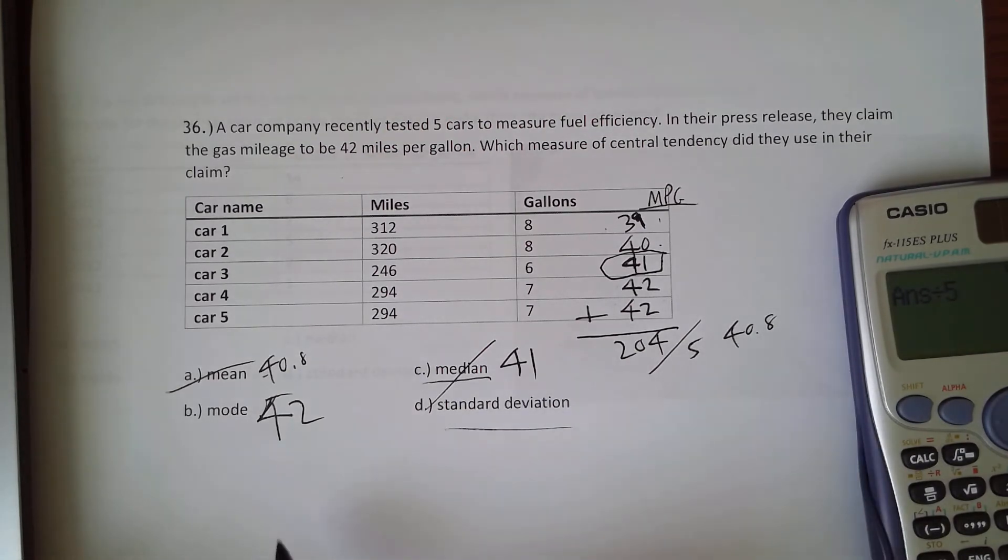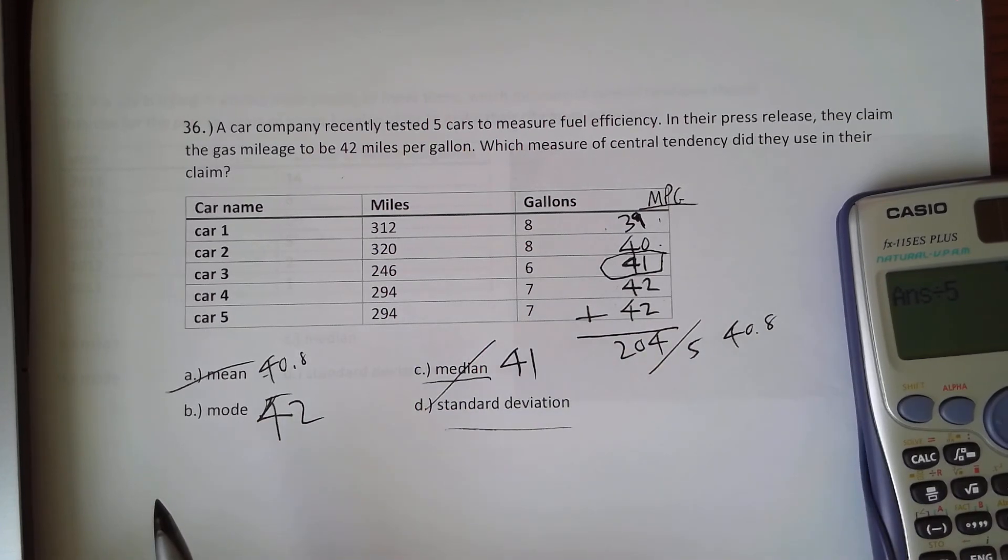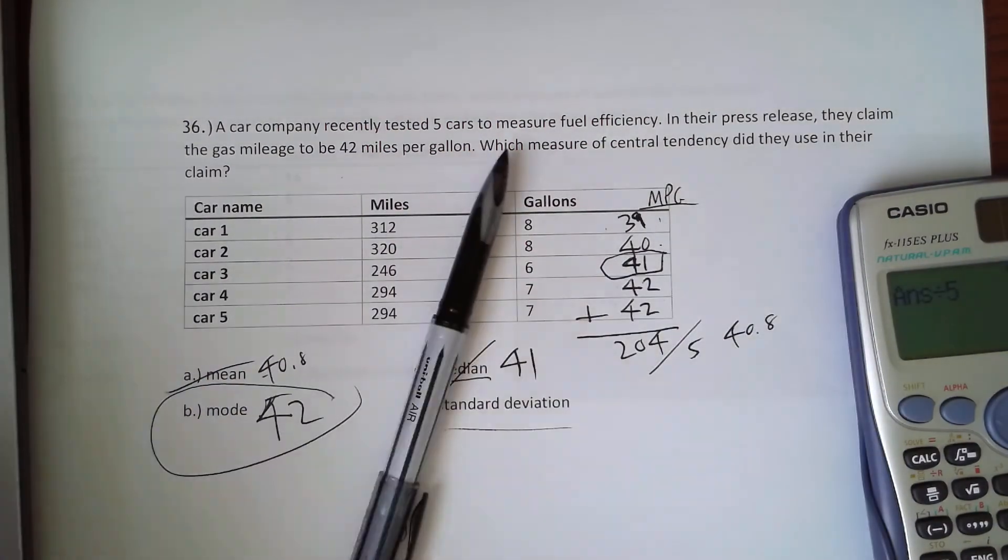Standard deviation is just going to talk about how spread out the data is. Well, this is not going to be anywhere near 42 spread out. Standard deviation you'll see in later problems, but in this case, mode's the correct answer.